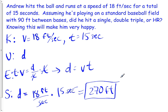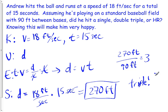So, that's his distance. Now, we want to know if he hit a single, double, triple, or home run. So, if it's 90 feet for each base, we can take his 270 feet, divide it by 90 feet for each base, and that's going to give us three bases. So, he hit a triple. Nice job, Andrew.